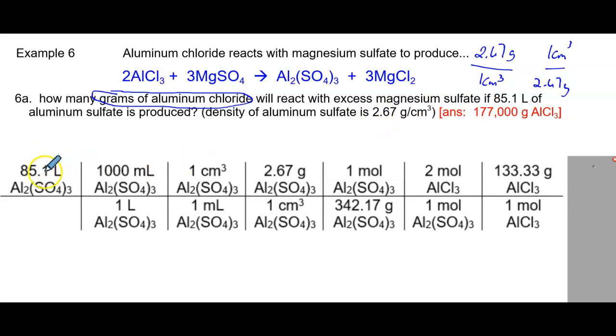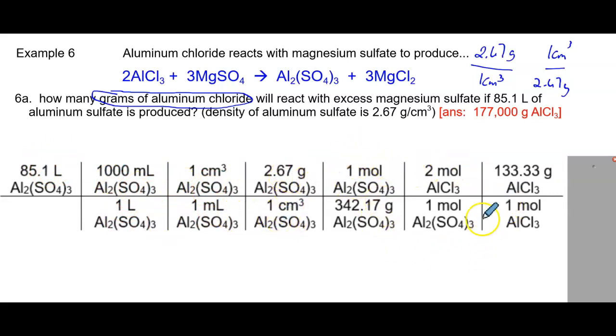So we started with volume, converted it using volume conversions, used the density to get from volume into mass, and then it was an ordinary stoichiometry problem.